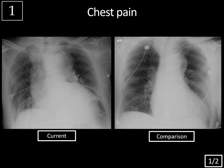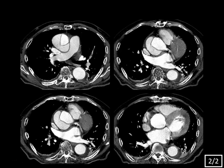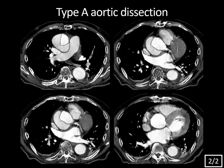Whenever you see a widened mediastinum, you should be concerned that there could be an expanding aortic aneurysm or an aortic dissection. The patient then had a CT angiogram of the chest, and indeed you can see that there's a type A aortic dissection.